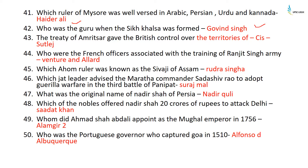The Maratha chief who forced Alivardi Khan to cede Orissa was Raghuji Bhonsle. The real name of Sadat Khan Burhan ul-Mulk was Mir Muhammad Amin. The treaty signed between Mysore and British India in 1784 was the Treaty of Mangalore. The king of Afghanistan invited by Tipu to invade India was Zaman Shah. The ruler of Mysore well versed in Arabic, Persian, Urdu, and Kannada was Hyder Ali. The Guru when Sikh Khalsa was formed was Govind Singh.